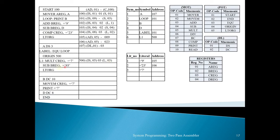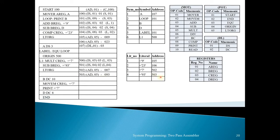Next is 'SUB BREG, =93' at LC 501 — SUB at position 04, BREG at position 02, and =93 is entered into the literal table. Now the second LTORG statement starts the second literal pool from 'A DS 3' to 'SUB BREG =93', containing literals =7 and =93. Using LTORG (assembly directive position 05), address of =7 becomes 502 and address of =93 becomes 503. Next is 'B DC 10' — DC is a declarative constant at position 02 in the declarative table; address of B is assigned 504. Intermediate code: 504 (DL, 02) (-) (010).